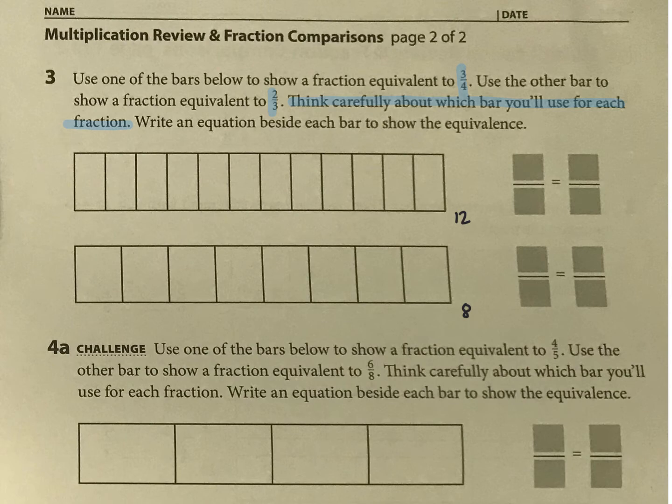So if I do 2 thirds up here, I need 3 equal pieces. So what's 12 divided by 3? I'd have 4 in each section. So there's my 3 sections. And I'm going to color in 2 thirds. And then I can see how many 12ths there are.